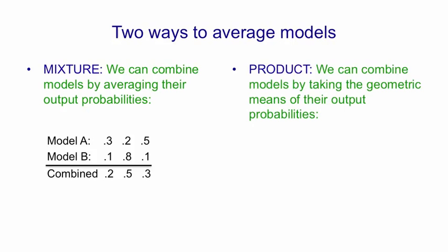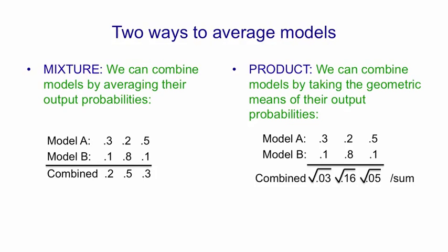A different way of combining models is to use a product of the probabilities. Here we take a geometric mean of the same probabilities. So model A and model B again assign the same probabilities as they did before. But now what we do is we multiply each pair of probabilities together and then take the square root. That's the geometric mean.